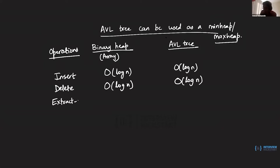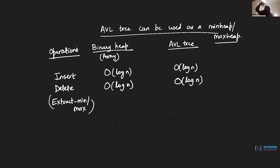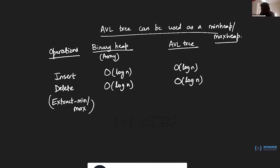If it's a min heap we can do extract min, or extract max for a max heap. Delete on a heap is the same as extract min or extract max. In a binary heap, the minimum or maximum value is already available at the root — the leftmost index of the array — so extracting just means swapping it with the rightmost element and then readjusting to satisfy the heap property.